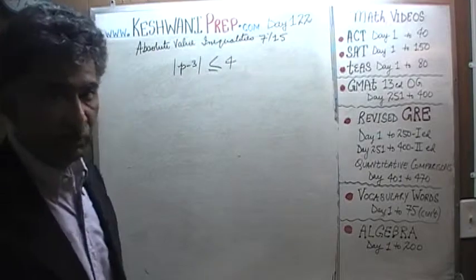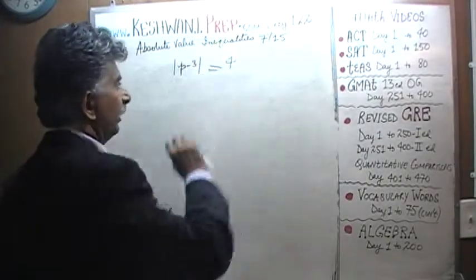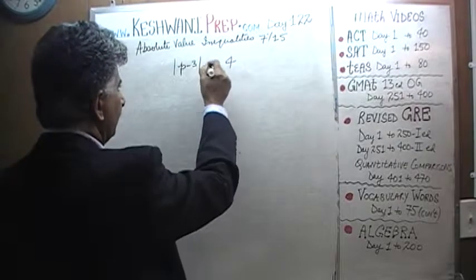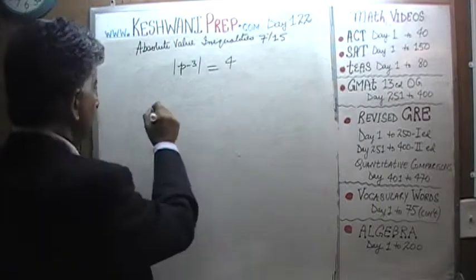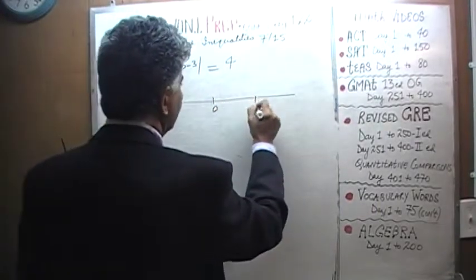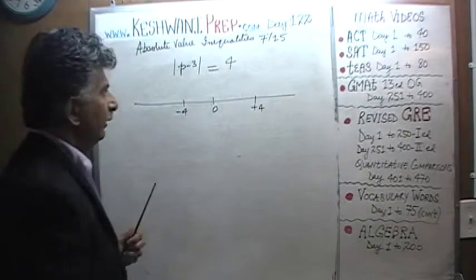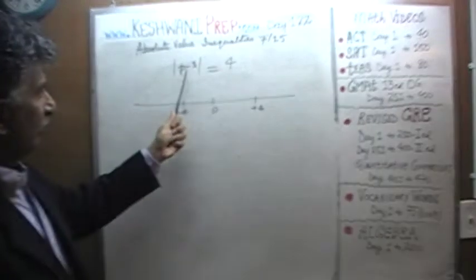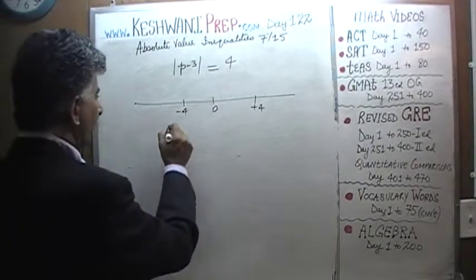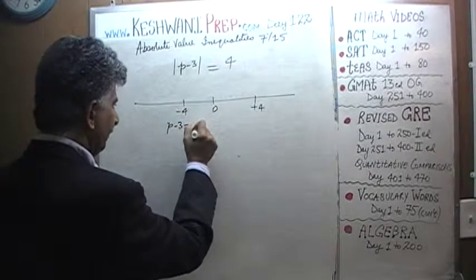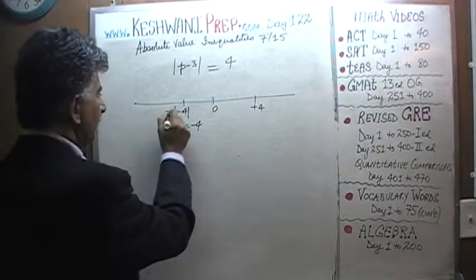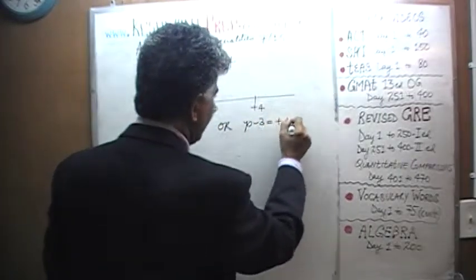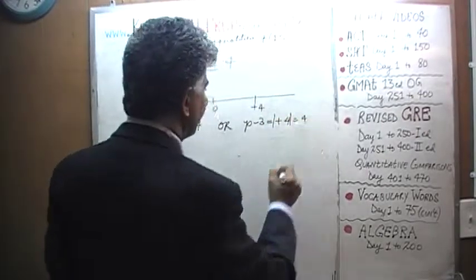Before we worry about the less than or equal to part, let's first worry about just the equal to part. Let's find out where P minus 3 is going to be equal to 4. Here is our number line: here is 0, here is positive 4, and here is negative 4. The absolute value of this quantity is going to equal 4 when either P minus 3 equals negative 4, or when P minus 3 equals positive 4. It is one or the other.